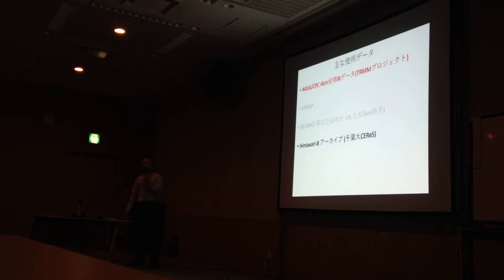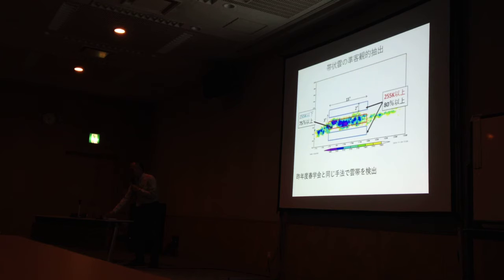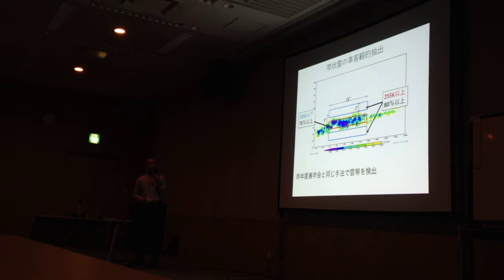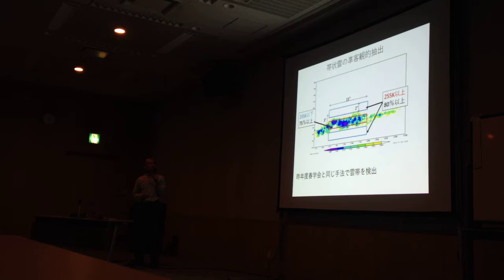主な使用データは、NASA CPCの4km格子の全球IRデータです。2段階で、まず雲帯を最初に検出しなければいけなくて、それを検出したらその後分割を見ていきます。これは去年と同じなんですけど、まず帯状をどう抽出するかです。